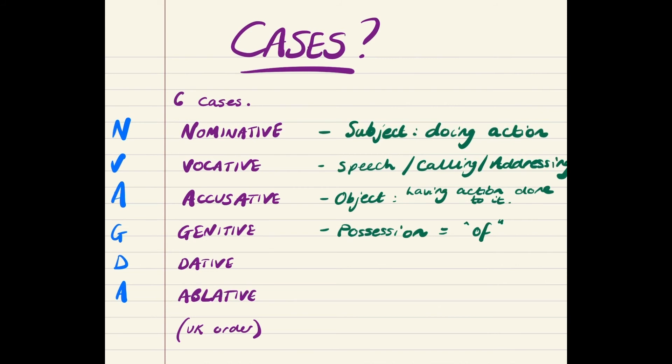Then we get to the dative, which you translate as to or for. So, often goes with the verb do, meaning to give. I give a present to you. The to you goes into the dative.